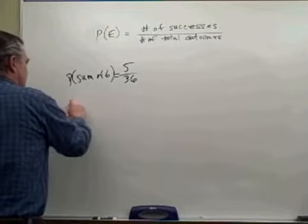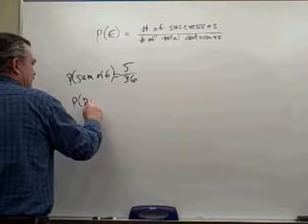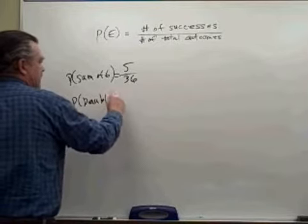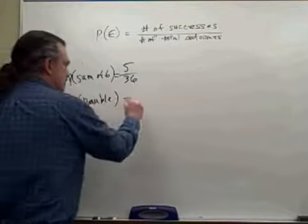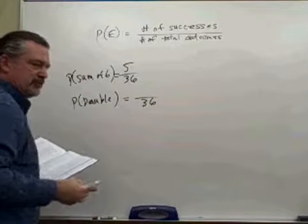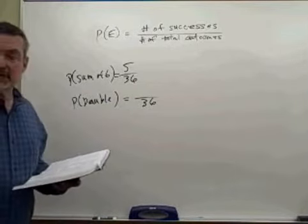Well, again, probability that we roll a double, there are still 36 outcomes when you roll two dice. But now there are six outcomes, aren't there?